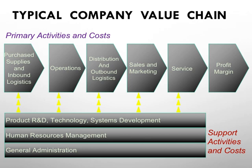The secondary or support value chain relates to office staff — the best way to put it. Support includes research and development people behind the scenes, the technology that allows the company to function, IT systems, HR systems, technology driving machinery, and HR management. These are people you hardly see but who do a lot of work.